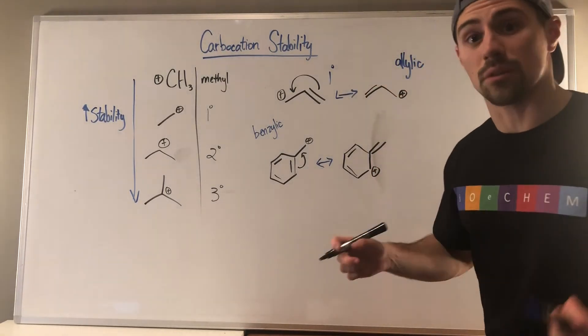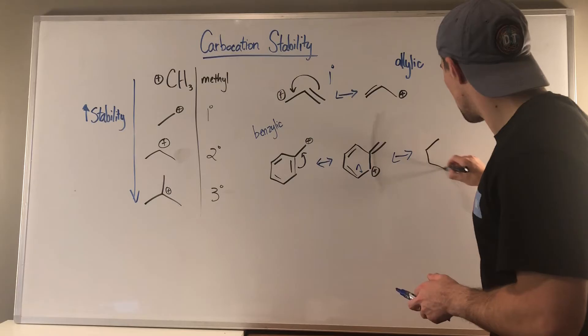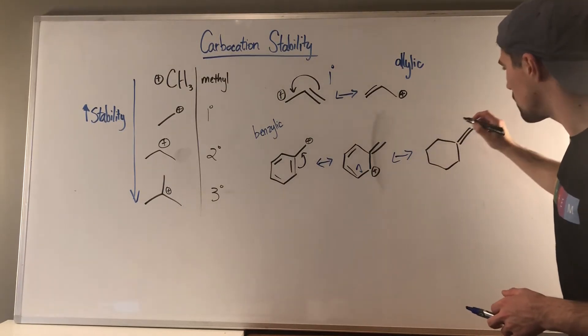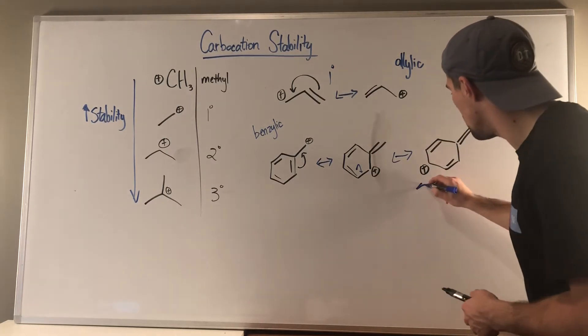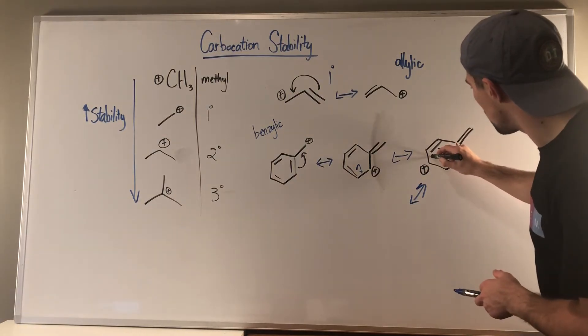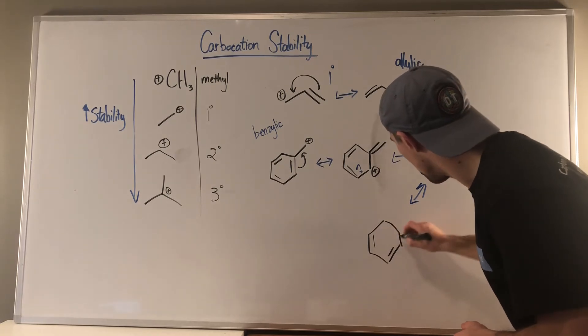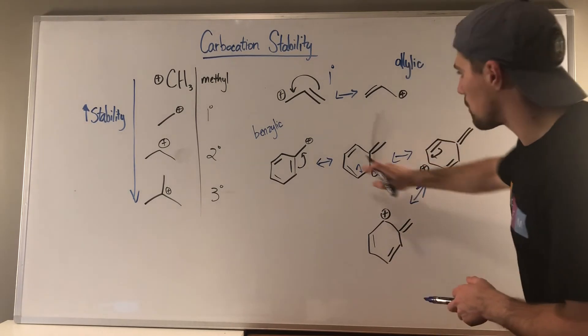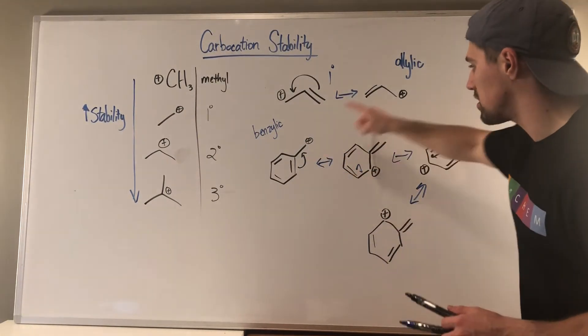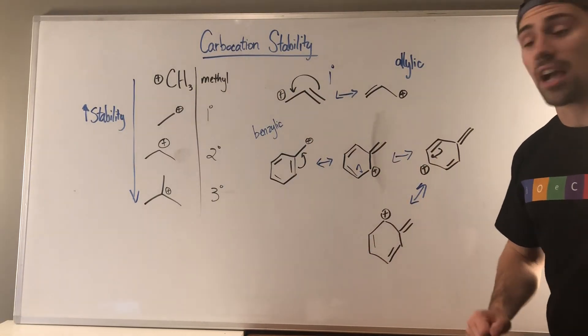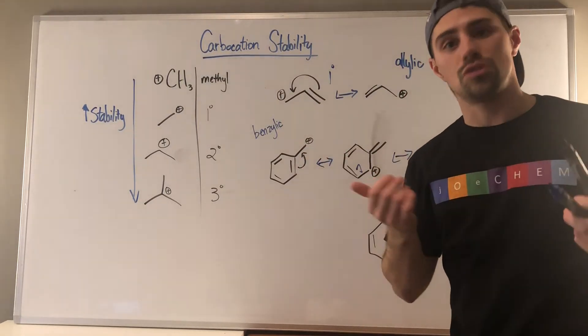And then here I can play a big game of ring around the rosie, because I can move this over here. And then one more time, I can move this right here. So you can see that even though we look like we're primary in this position, we actually have four resonance structures. This charge is distributed amongst the whole ring, a lot of the members inside the ring. So this is not just your run-of-the-mill primary carbocation, neither of these. The resonance is a huge stabilizing factor.